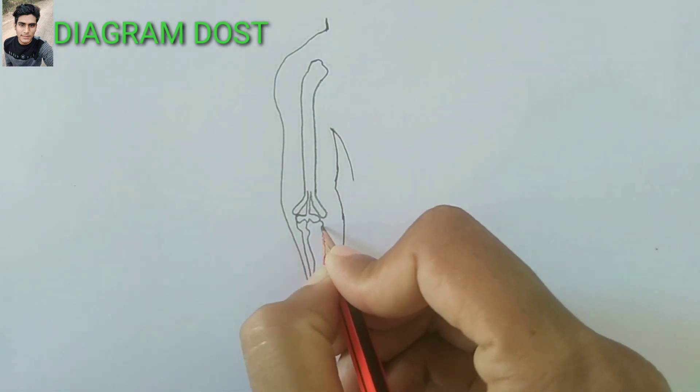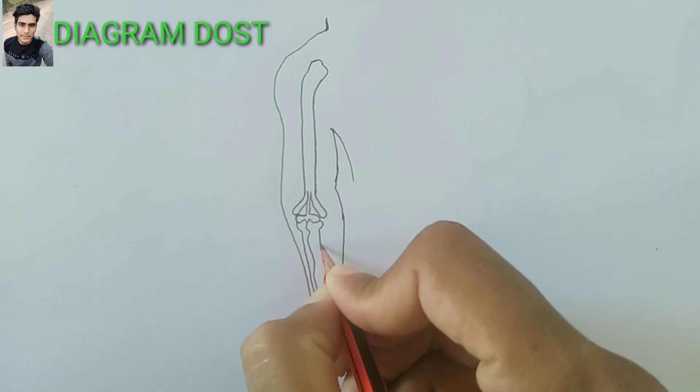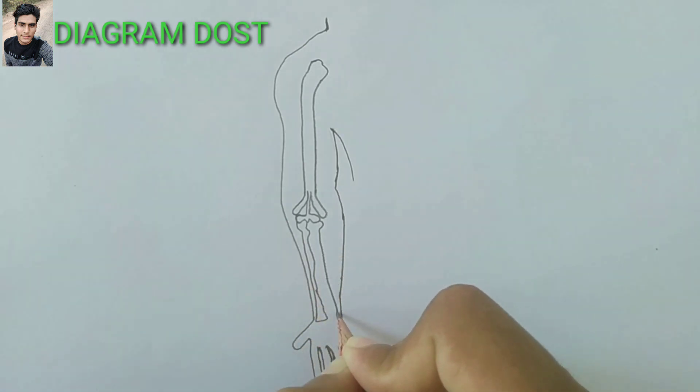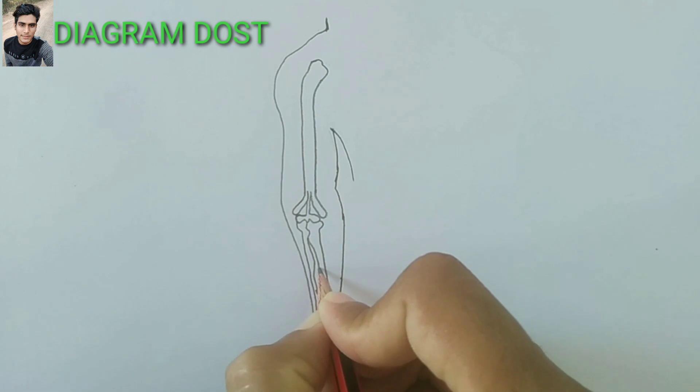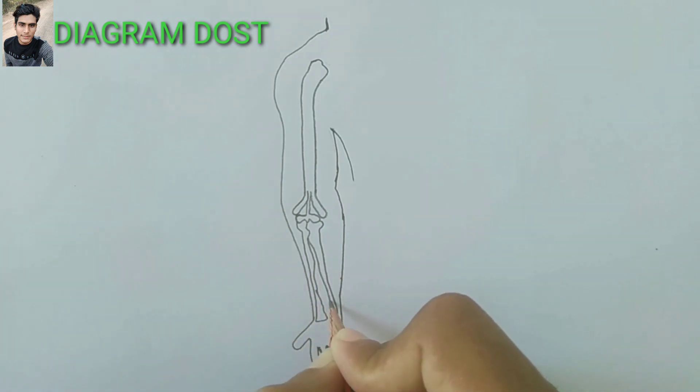Now this is the ulnar bone. There is little gap between ulnar and radial bone.